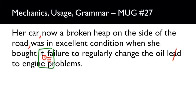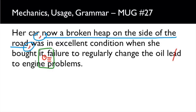You probably heard the non-essential element as I was reading the sentence to you. This is your non-essential information, and you know by now that you separate those off with commas when you see them floating in the middle of an independent clause. 'Now a broken heap on the side of the road' is extra information — it is not needed for the main independent clause to make sense. The main independent clause is 'her car was in excellent condition when she bought it.' Whenever you add extra information like that in the middle of a sentence, separate it off with commas.